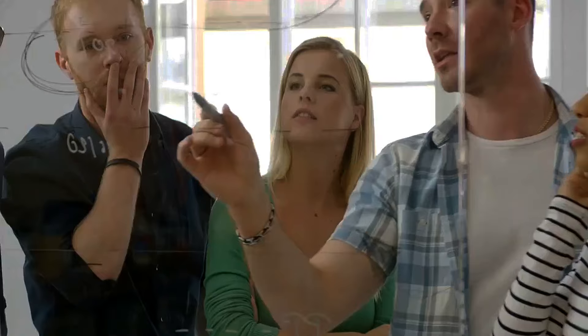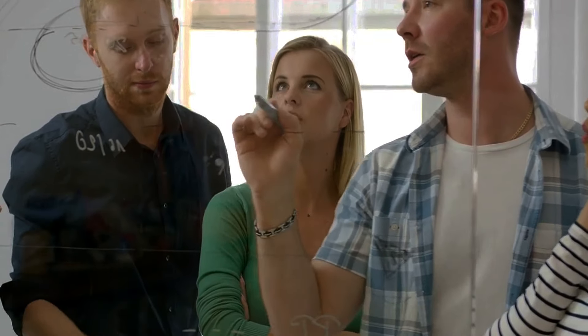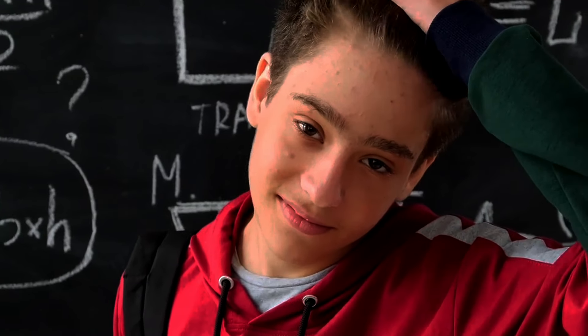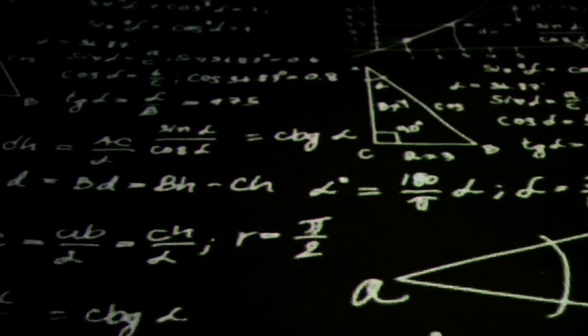Conversely, the null or empty class must not be a member of itself. But here's where the paradox kicks in. Suppose we form a class of all classes that, like the null class, are not included in themselves. The paradox arises when we ask whether this class is a member of itself. If it is, then it must not be. And if it is not, then it must be. This self-referential loop creates a logical contradiction.